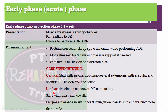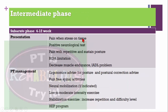For lumbar spine in the acute phase, teach drawing-in maneuver and multifidus muscle contraction. Start exercises with rolling, then gradually progress to sitting, standing, and walking. Progress exercise in sitting for 30 minutes, then if the patient can sit greater than 30 minutes, progress to standing greater than 50 minutes, then walking one mile or more.